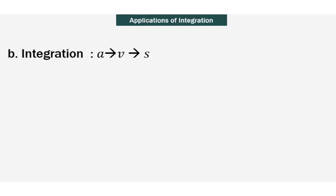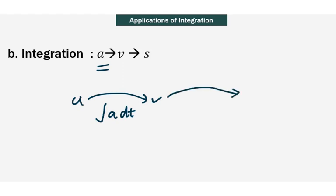Next, let's look at integration. Conversely, if a particle moves in a straight line where the acceleration is given by a, we will be able to get the equation of velocity by integration of the acceleration with respect to t. Continuing with that, if you are given the velocity equation, to get the displacement, all you need to do is integration of the velocity with respect to time.